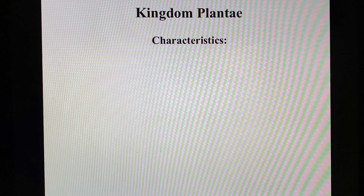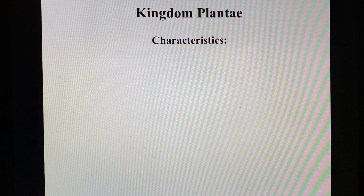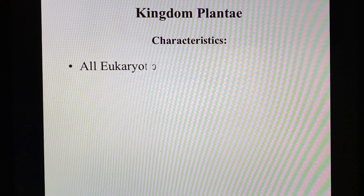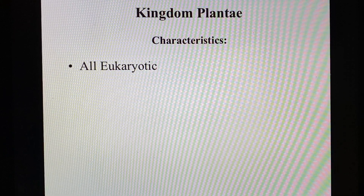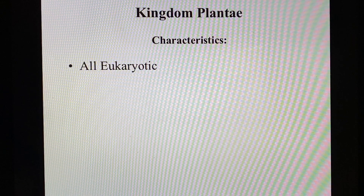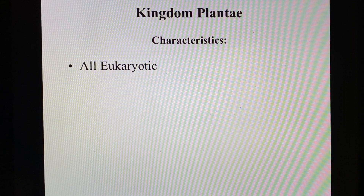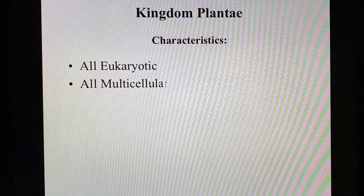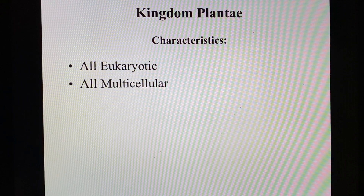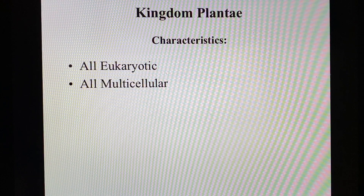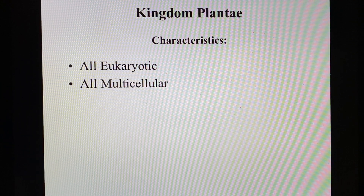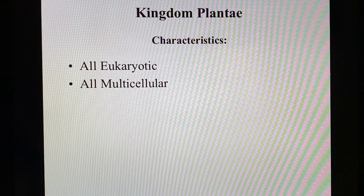This is our fifth kingdom. And let's look at the general characteristics. All plants are eukaryotic — you guys know that word — that means they all have nuclei. They are all multicellular. There was a time where algae and kelp were considered part of the plant kingdom, but they've been moved out to Protista now.